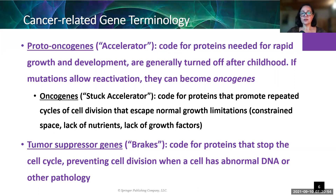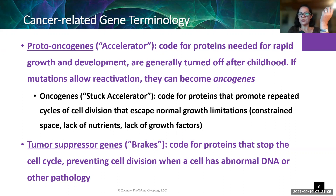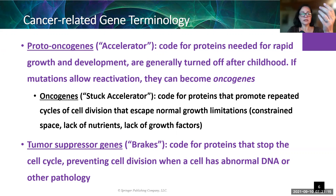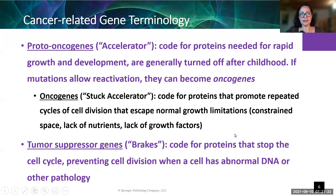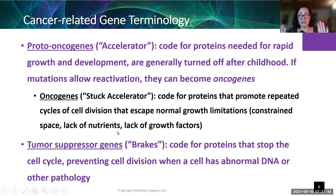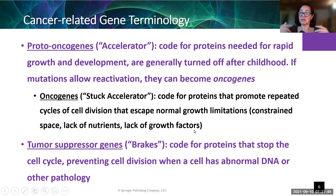Think about wound healing: when you have an injury, cells are supposed to turn on the copy-themselves signal. But once the hole is filled in, that's supposed to stop — that's what we mean by growth limitations, constrained space. With an oncogene stuck in the on position, cells just keep dividing. Lack of nutrients should signal the cell to stop dividing — oncogenes ignore that. Lack of growth factors, not receiving the signal to copy — they still copy themselves.